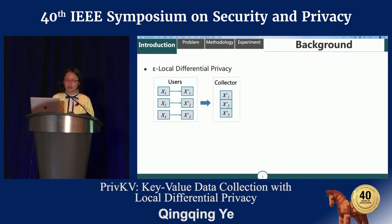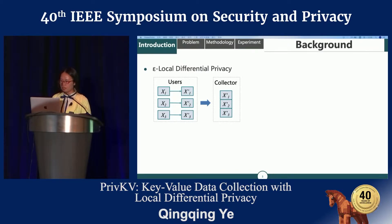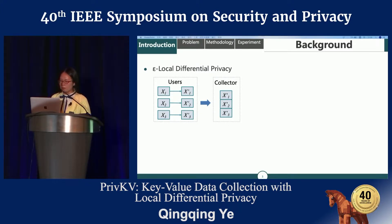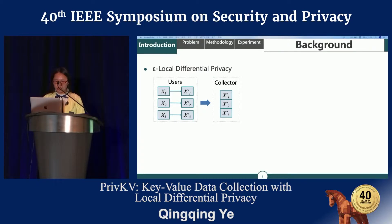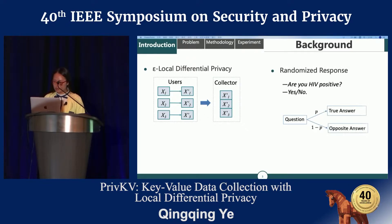Nowadays, data collection from individual users to a collector is more and more pervasive. However, this may come with privacy issues. As an answer to privacy-preserving data collection, local differential privacy, or LDP, is a privacy model where each user locally perturbs their data and then sends it to an untrusted data collector. Currently, randomized response has been the predominant technique for LDP.